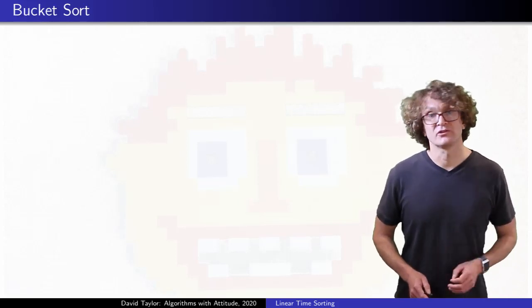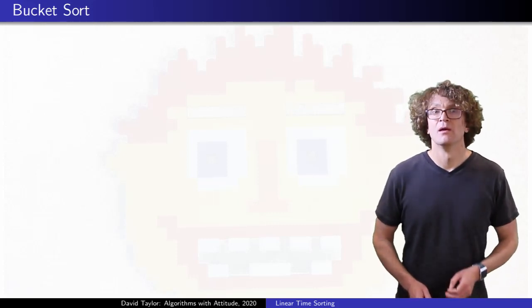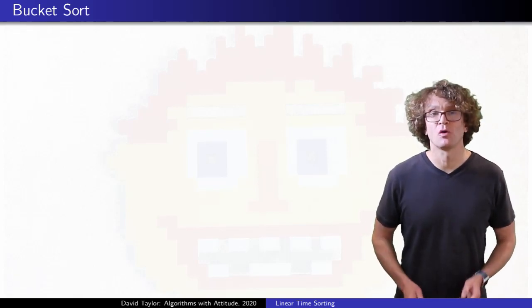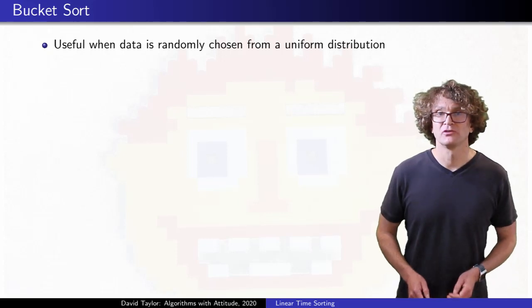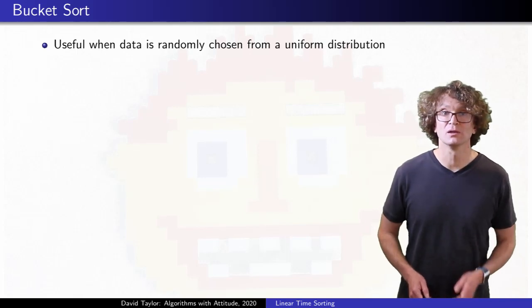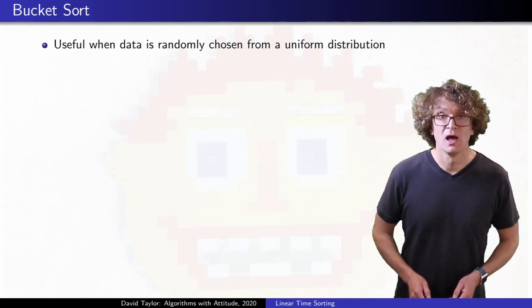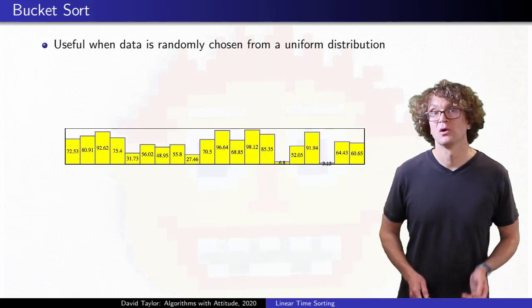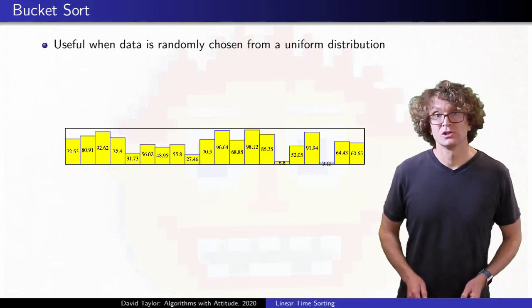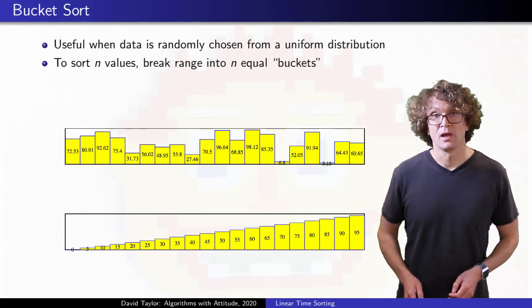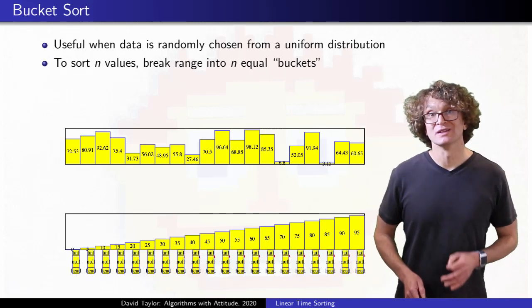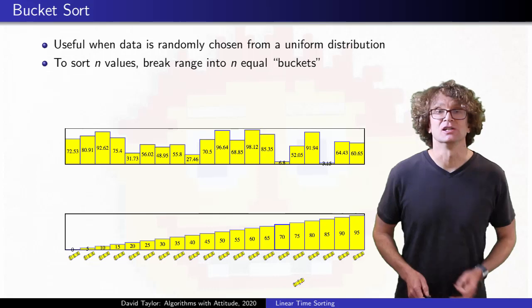That brings us to our next linear time sort, bucket sort. Bucket sort doesn't assume that the input is an integer, but it does assume that it is uniformly distributed. So, in its most basic form, we assume that all of the inputs are randomly and uniformly chosen from real numbers over some range. In my animation, I am assuming that the numbers are distributed from 0 up to 100. So what you do is, if you have n items to sort, you break your range into n different equal sized parts, and you treat each part as a bucket for any numbers in that sub-range.